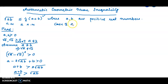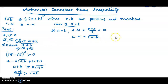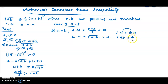Case 2: when A equals B. If A equals B, then the arithmetic mean equals (A + A)/2 = 2A/2 = A. The geometric mean equals root of A times A, which is the square root of A squared, equal to A. Therefore AM equals GM. That means root of AB equals half of A plus B when A equals B, confirming equality holds in this case.